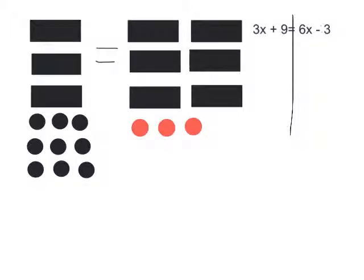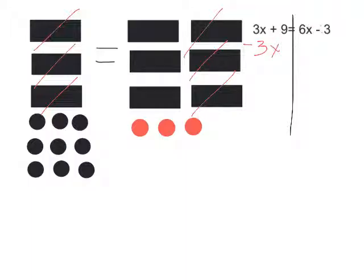If I want to get x's on one side, I could take away 3x's on the left and 3x's on the right. So if I take away 3x's on the left, I'll take away 3x's on the right. That would leave me with just 9 on the left and 3x's minus 3 on the right.